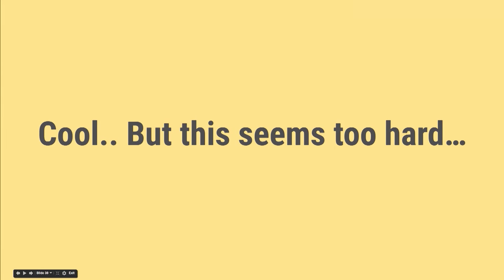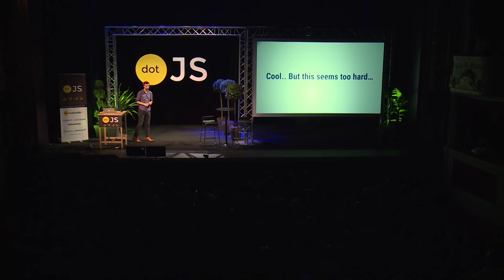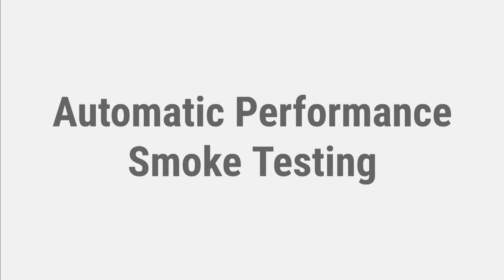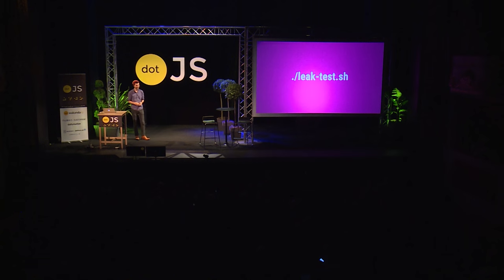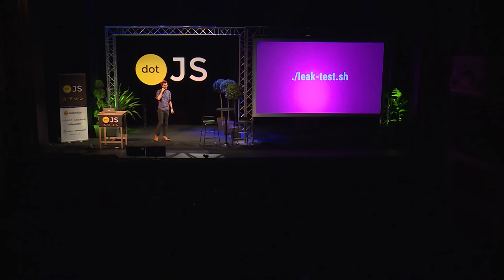Maybe you're buying into it now, maybe not. This seems way too hard — nobody on my team would ever do this. Probably true. But this sounds like a good idea: what if you could do automated performance smoke testing? Just run it on CI and everything works. Wouldn't that be crazy? Just './leak-tests'.